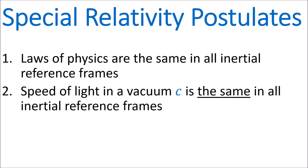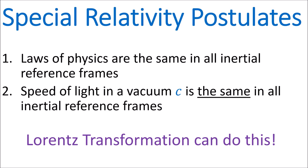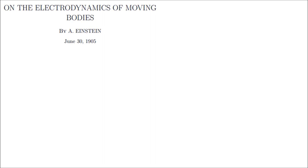To fix this, we need a new transformation that leaves the speed of light unchanged when we go to a different reference frame. This new transformation is called the Lorentz transformation. It was Lorentz who first discovered the transformation, not Einstein, but Einstein was the first person to derive the transformation from the above two postulates. Einstein derived this Lorentz transformation in his 1905 paper, which introduced special relativity.